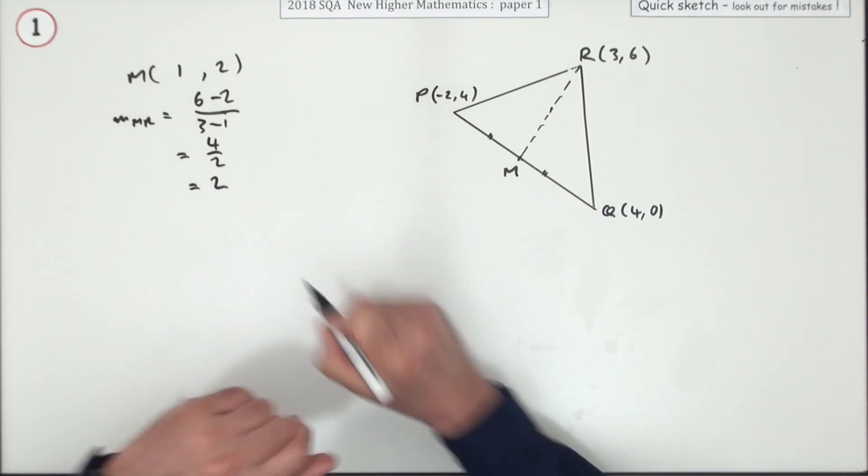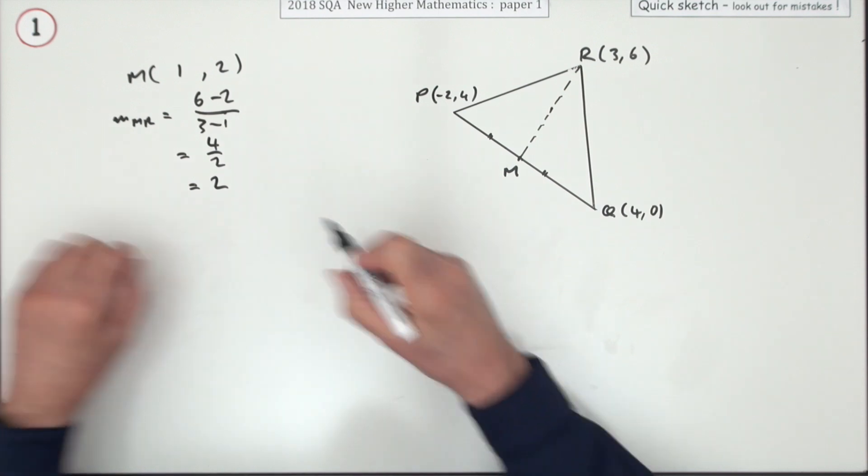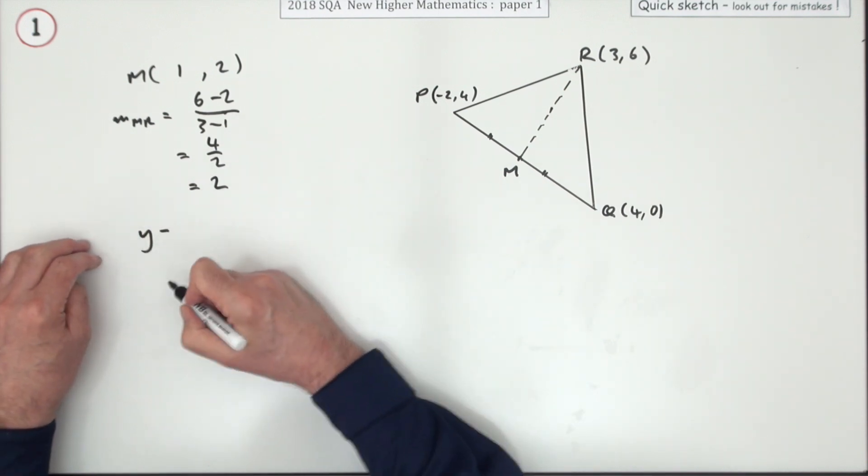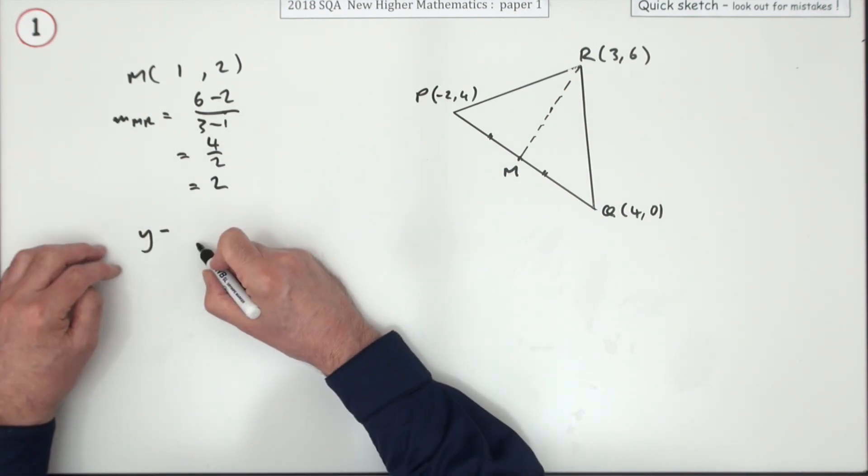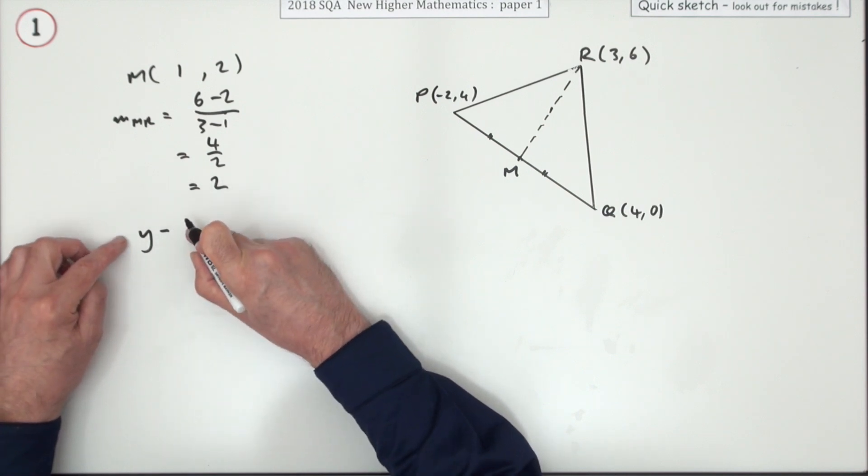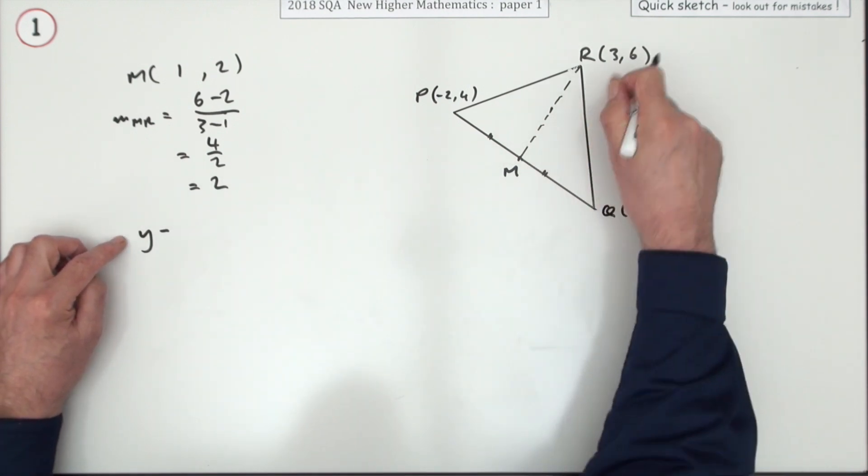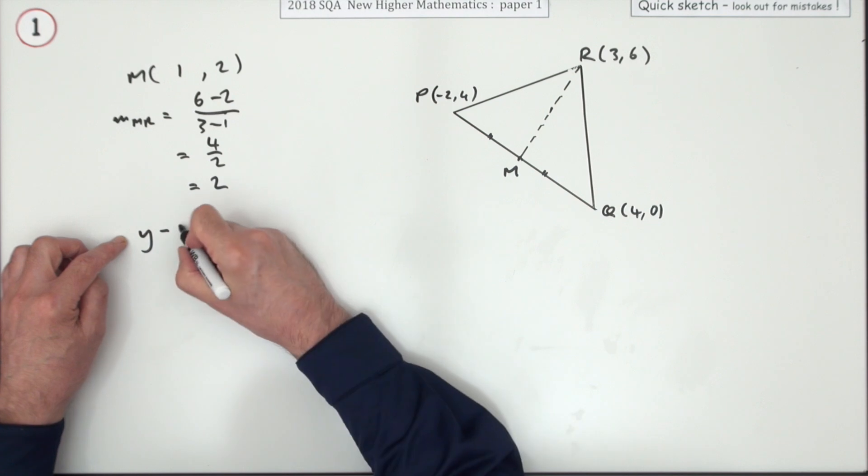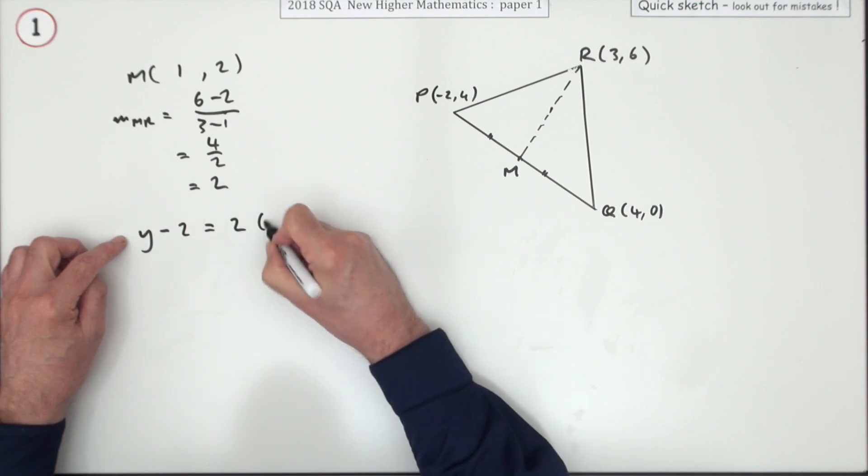For the third mark, what's the equation of this median, the equation of the line? It'll be y minus the y coordinate of either point—I'll use this one—is the gradient times x minus the x coordinate of that same point.